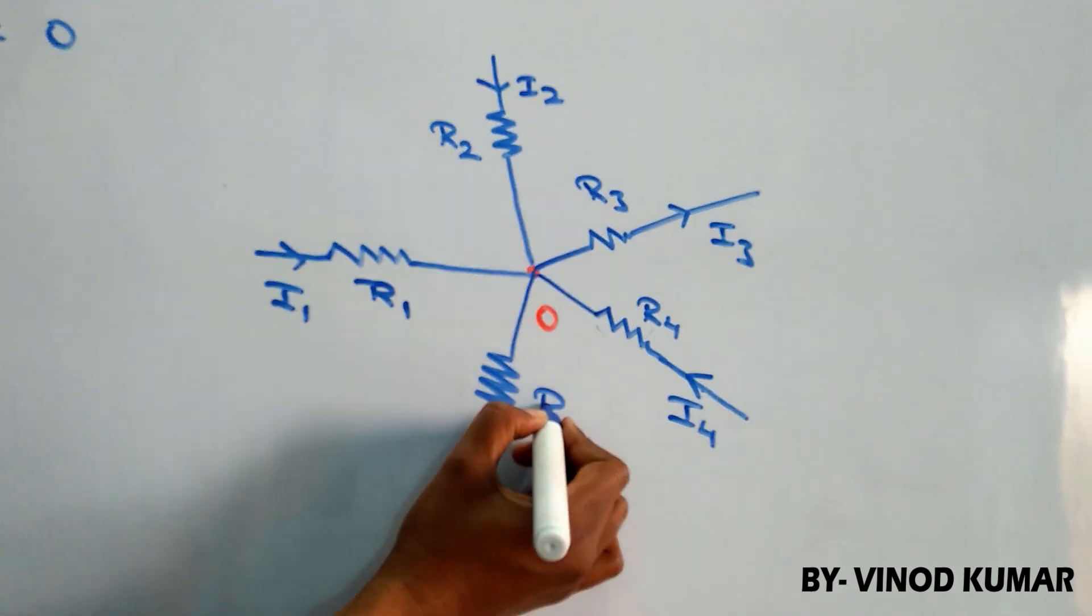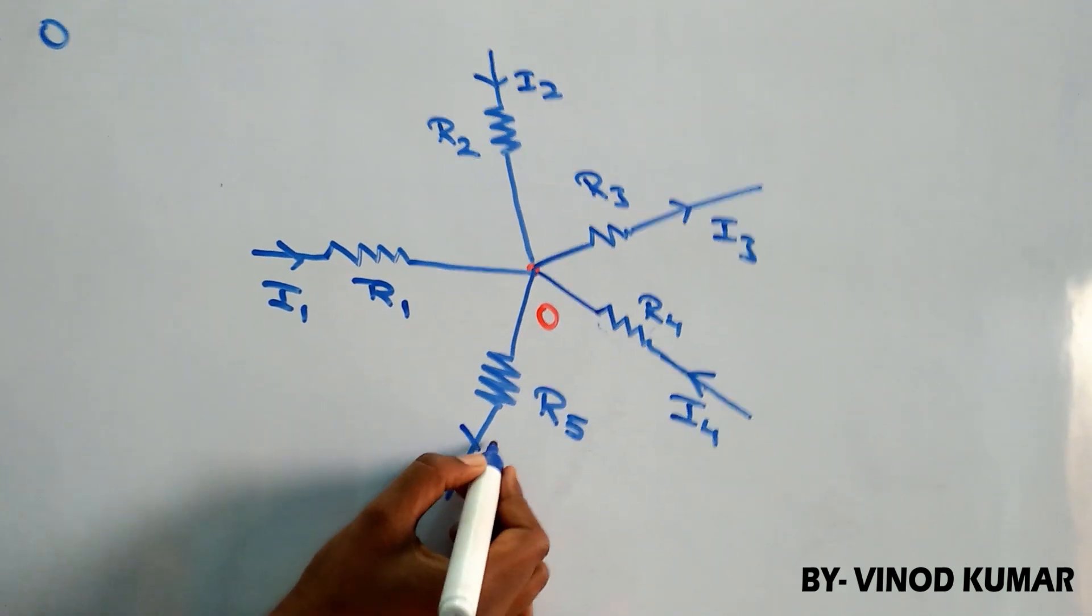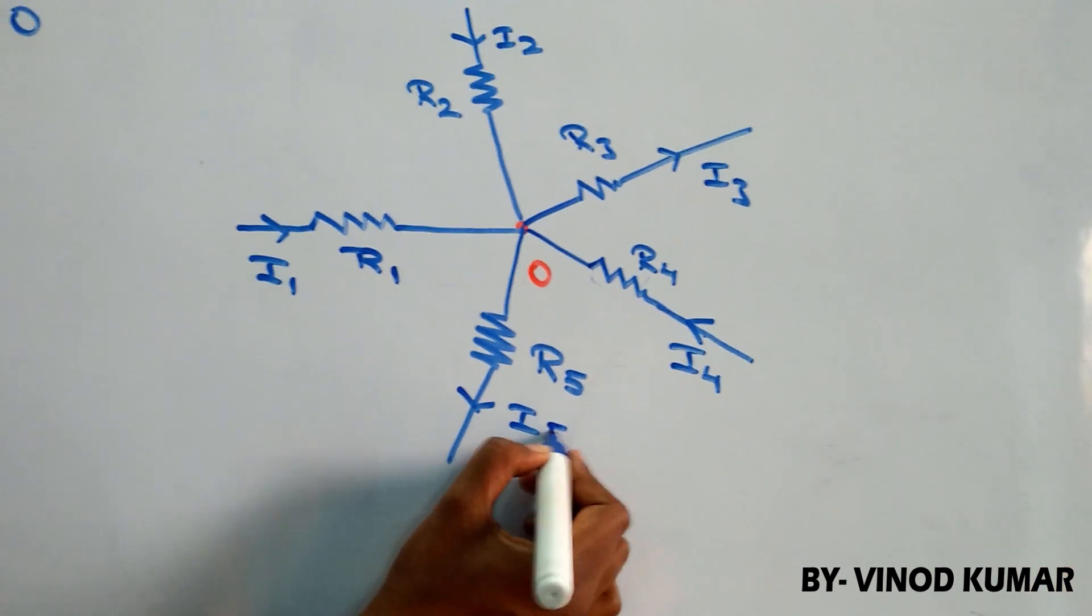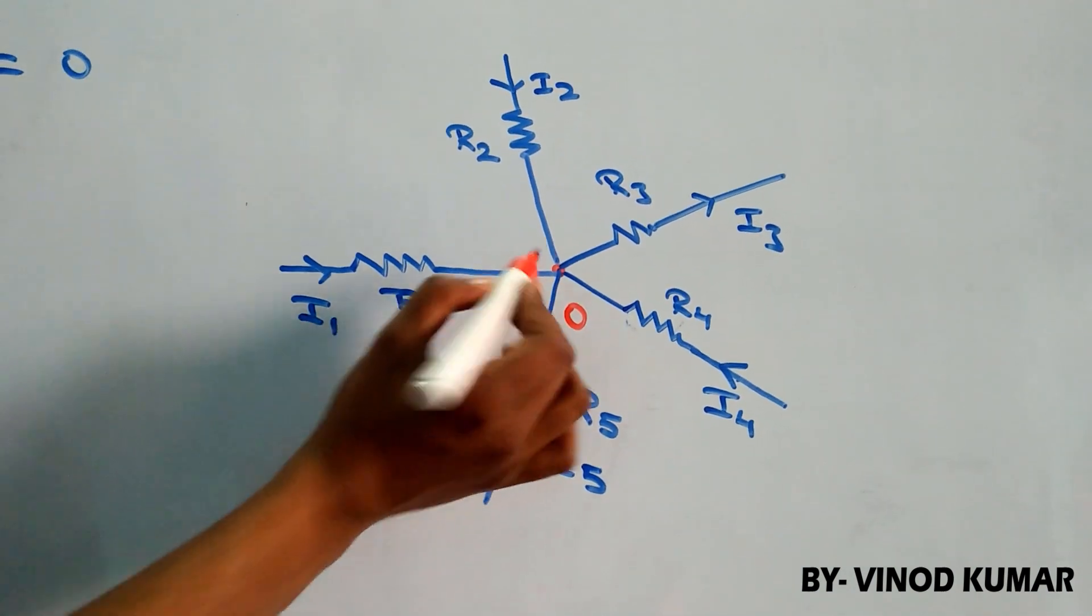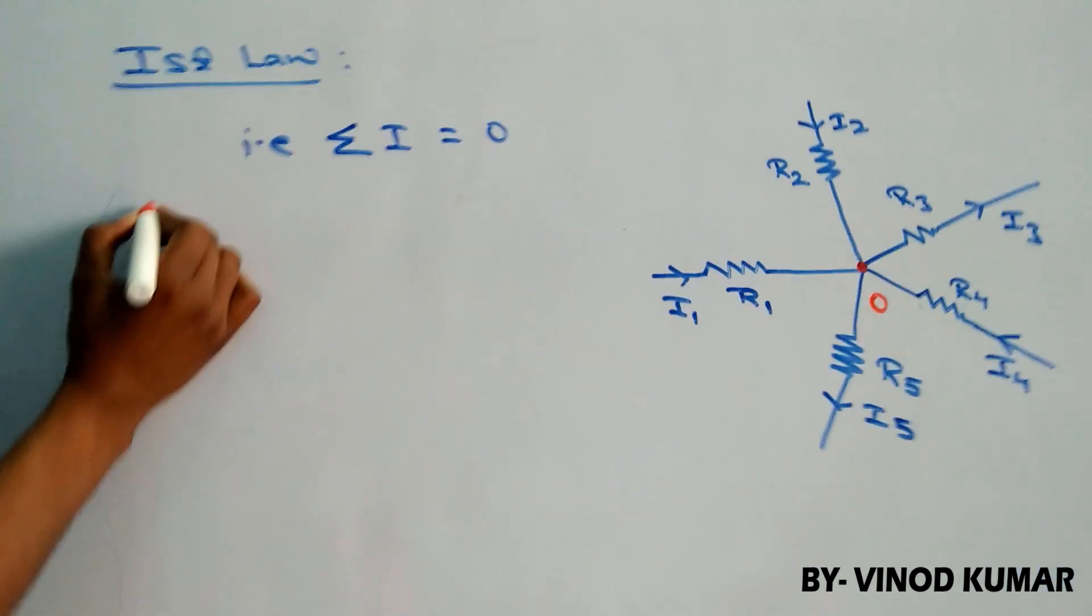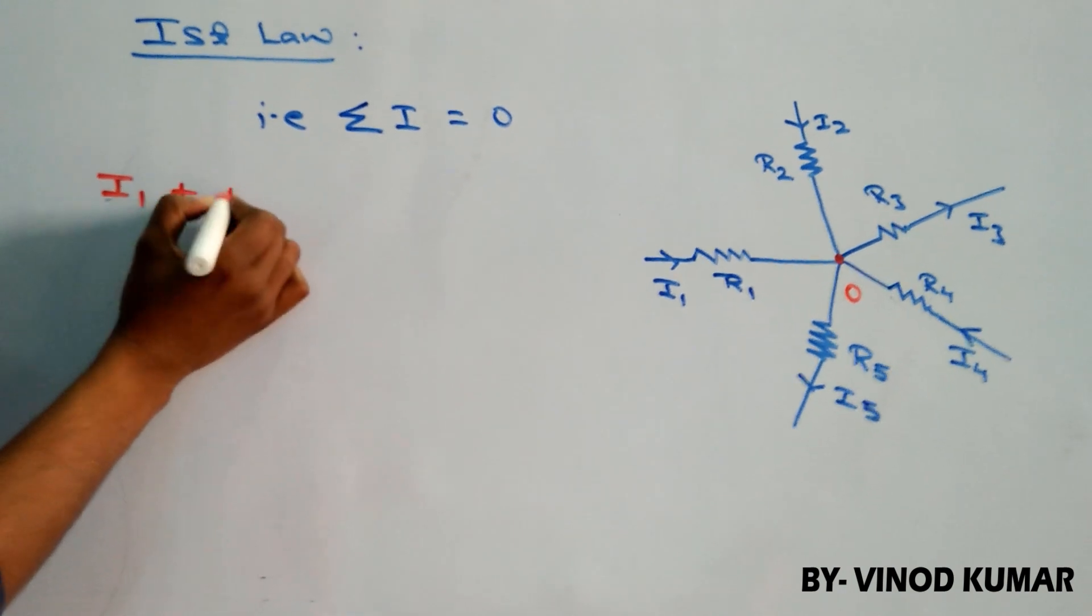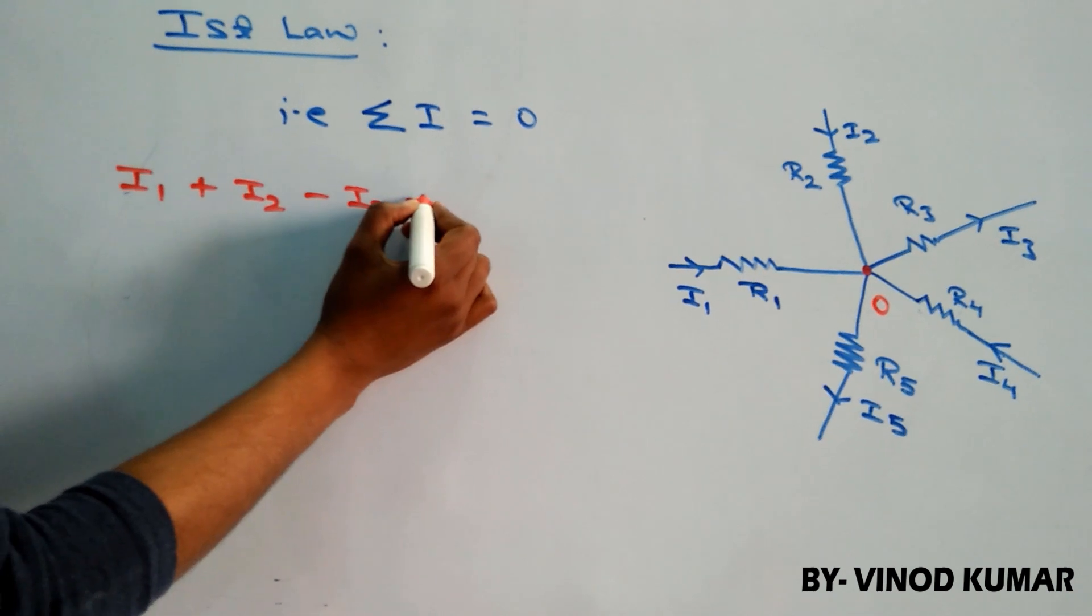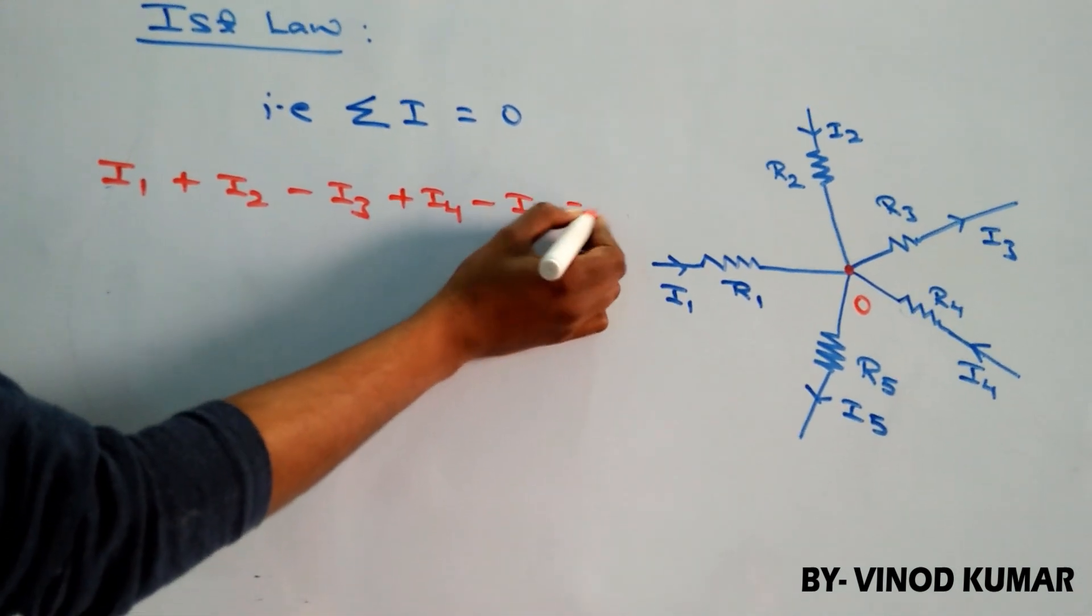And lastly, I am taking one more branch that is containing a resistor of resistance R5 and current I5 is moving away from the junction. So, applying Kirchhoff's first law, we can write here I1 plus I2 minus I3 plus I4 minus I5 equals to zero.